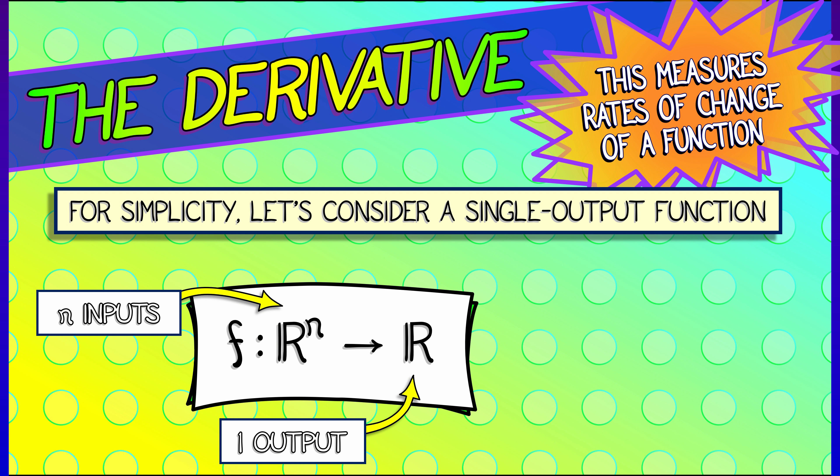In order to keep things a bit simpler, let's consider a function that has many inputs but just one output. Let's say f goes from ℝⁿ to ℝ — so n inputs, one output. How many rates of change are there in this function? How do we keep track of those rates of change?